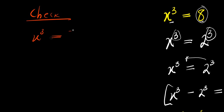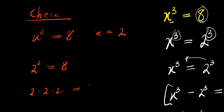x power 3 equals 8 and our x is 2. So you have 2 power 3 equals 8. 2 power 3 is 2 times 2 times 2 equals 8, and this is 8 equals 8.